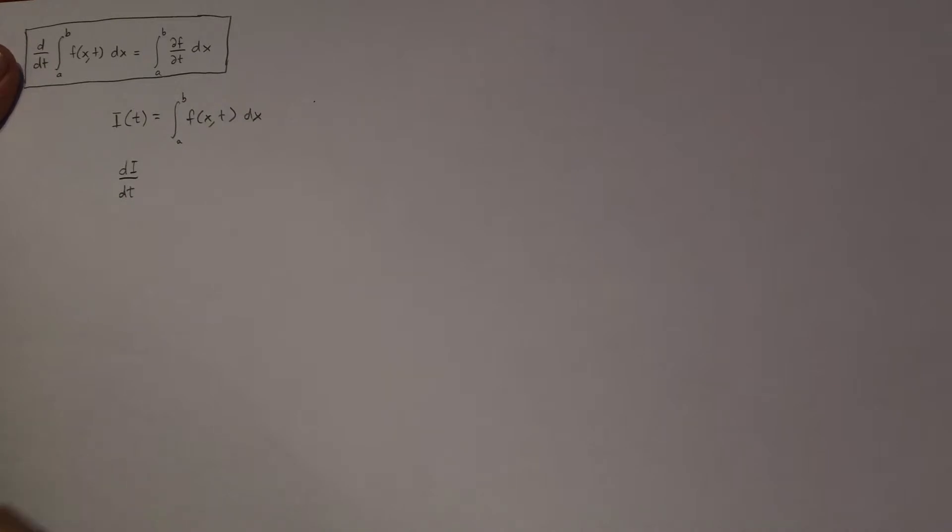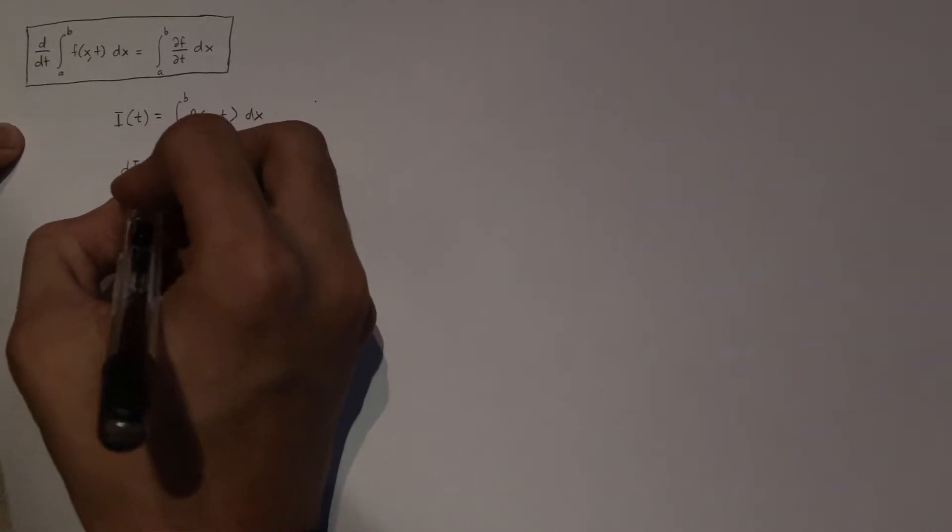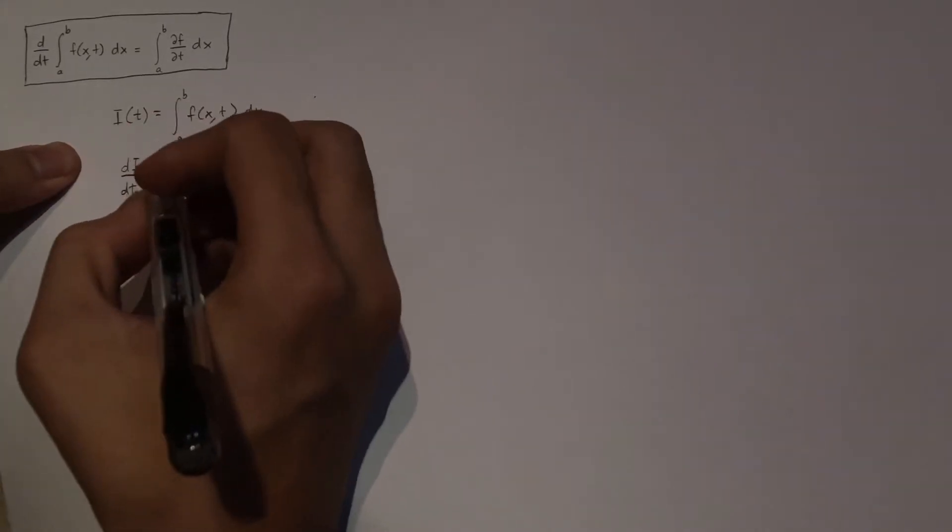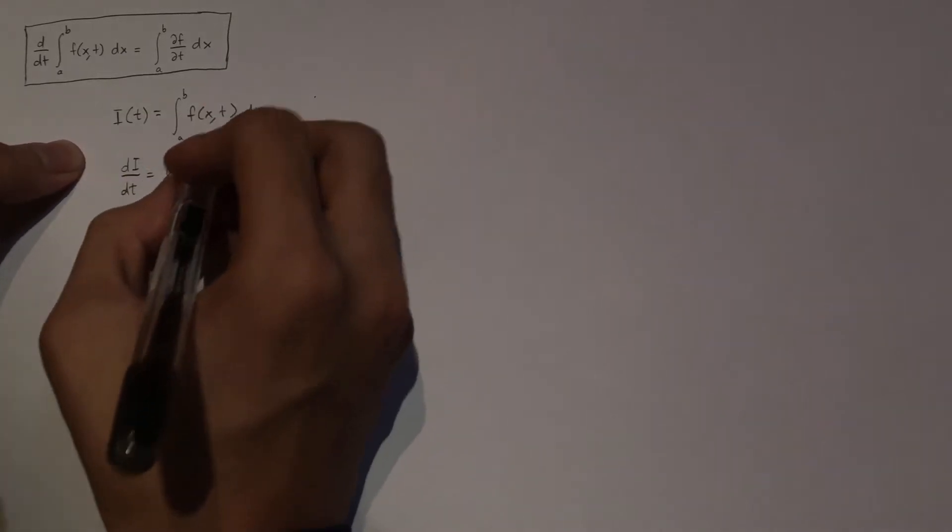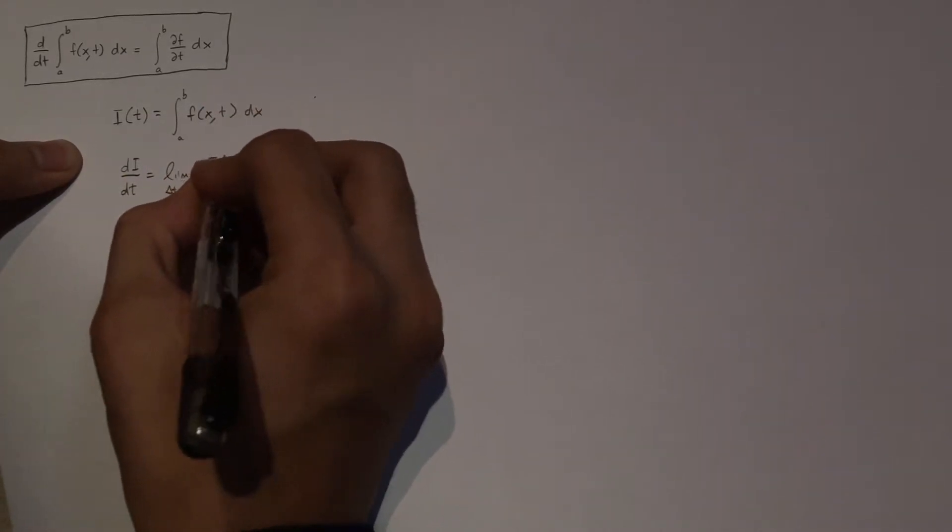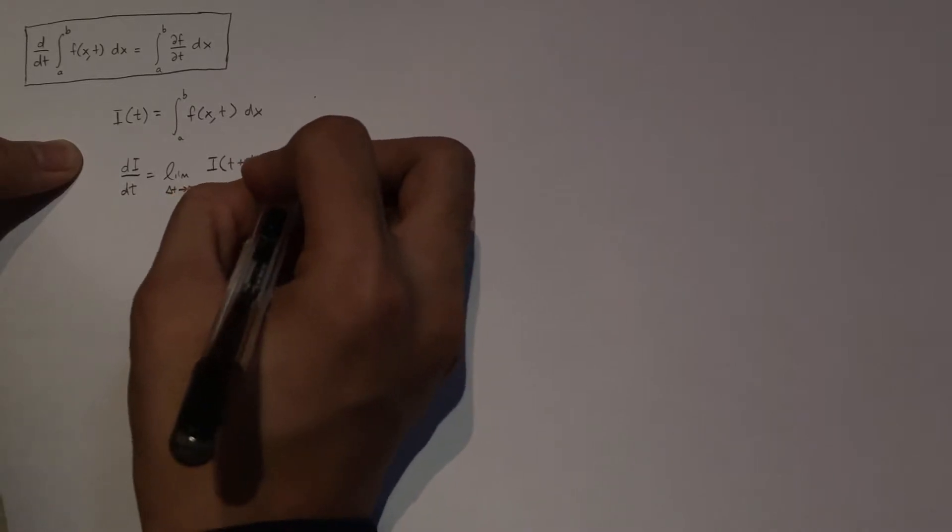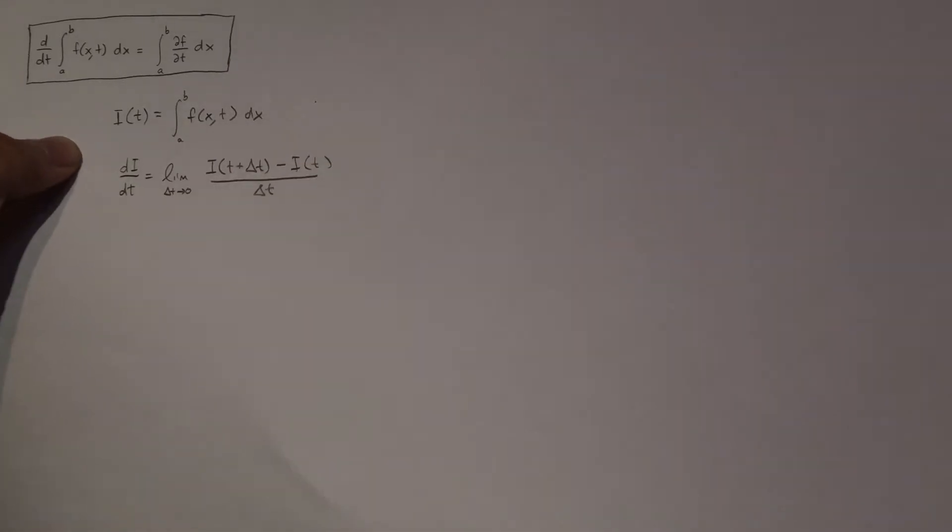And so definition of the limit says that the derivative of something with respect to T would equal to the limit. I'm going to use the delta T approaching zero method. And it's going to be that limit of I of T plus delta T minus I of T all divided by delta T like that.